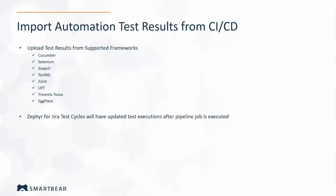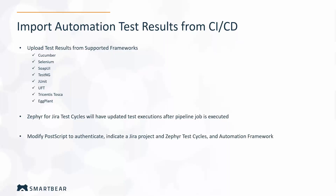Zephyr for Jira test cycles will have updated test executions after the pipeline job is executed, and this will happen in one seamless motion without you having to manually upload these results. All you need to do is modify the post script to authenticate into your Jira instance with your user account, indicate the proper Jira project and Zephyr test cycles, and specify which automation framework you are importing from.